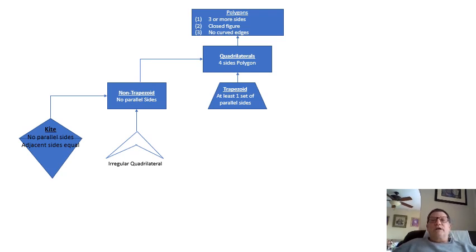We start with polygons, went to quadrilaterals, four-sided polygon. Then we have non-trapezoid which has no parallel sides. So can I go there? Then it says the trapezoid has at least one set of parallel sides.